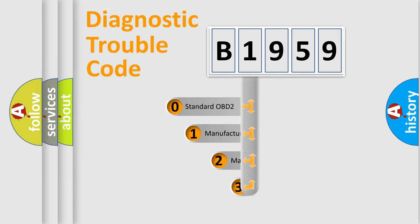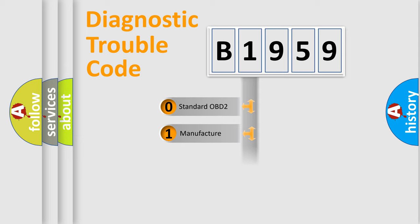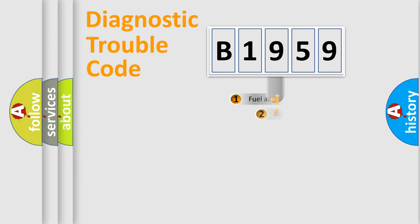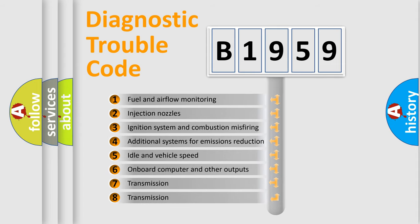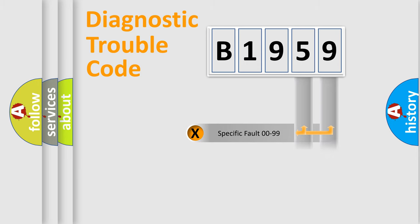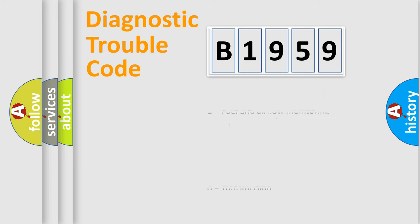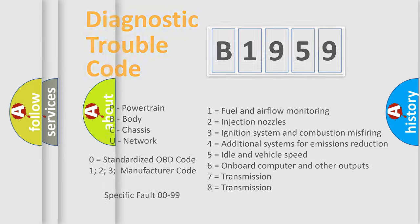This distribution is defined in the first character of the code. If the second character is expressed as zero, it is a standardized error. In the case of numbers 1, 2, or 3, it is a manufacturer-specific error expression. The third character specifies a subset of errors. This distribution is valid only for the standardized DTC code, and only the last two characters define the specific fault of the group. Such a division is valid only if the second character code is expressed by the number zero.